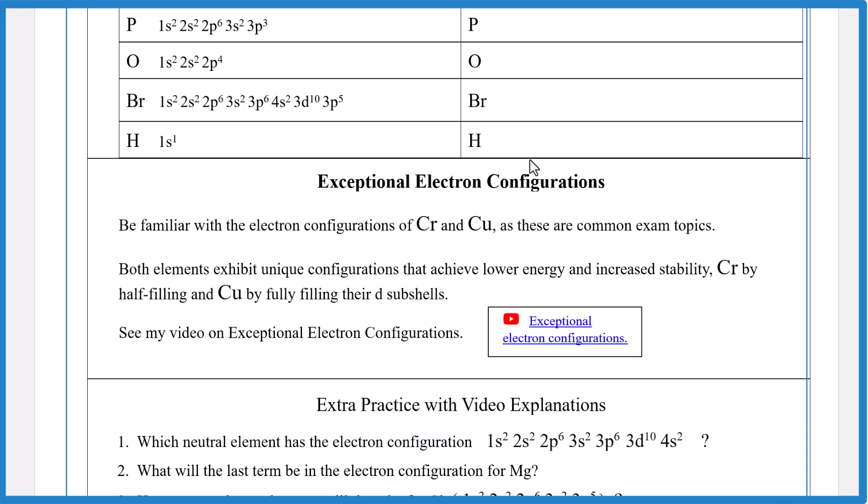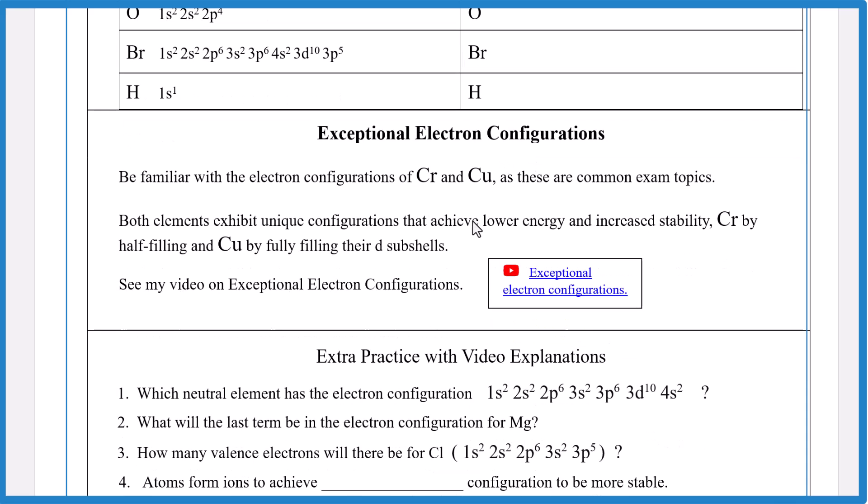So let's look at some exceptional electron configurations. If you're an AP chem or a general chem in college, you might need to do this. The ones you want to watch out for, chromium and copper. They like to test on those. There's a link here where you can learn all about it. But it's a little bit involved. But it's very doable.